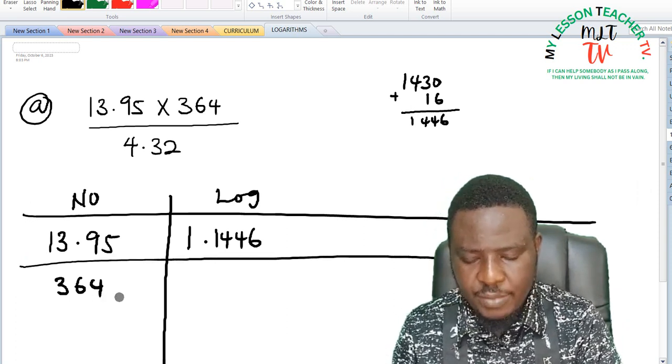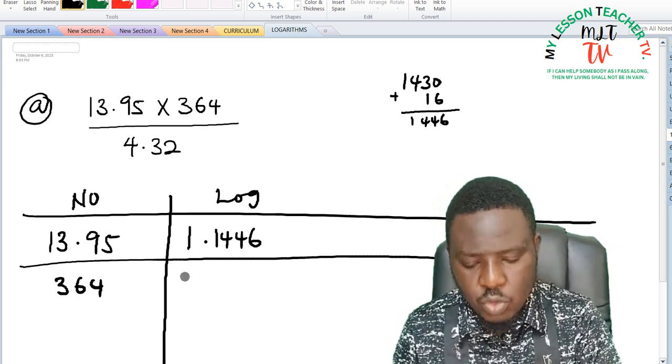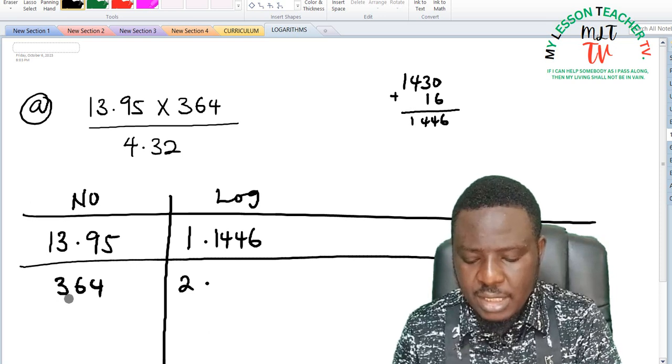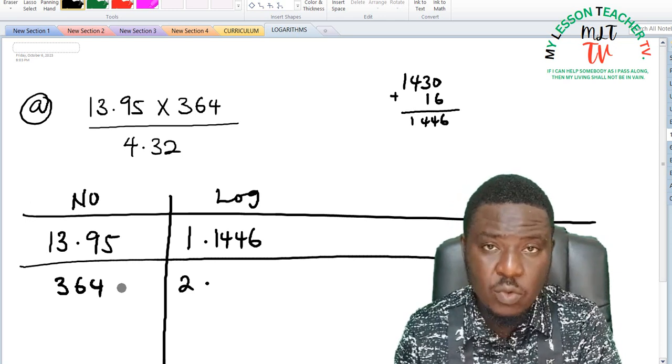Converting 364 to logarithm expressed in standard form is going to be 3.64 times 10 to the power of 2, so my characteristics is going to be 2 point. Now that this is not up to 4 digits I am going to look for 36 under 4 difference 0.